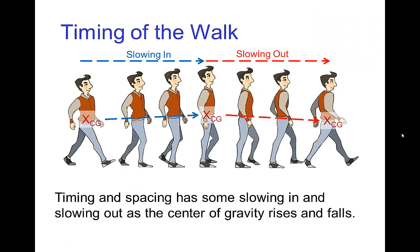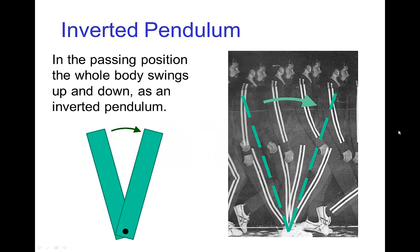This up and down motion affects the timing because the body tends to slow down rising up to the highest point, and then speed back up as it falls back down. So if the highest point for the center of gravity is in the passing position, then from contact to passing position we tend to slow in, and then slow back out coming out of the passing position. One way to understand this is that the body swings up and then back down somewhat like an inverted pendulum, so this is some of the timing that occurs with this tipping motion.